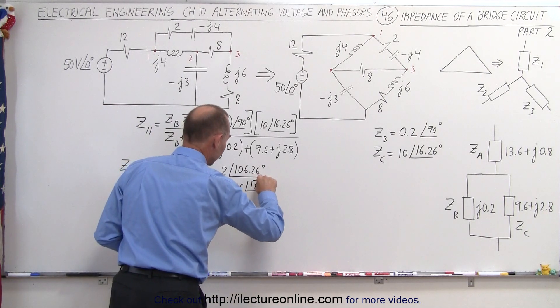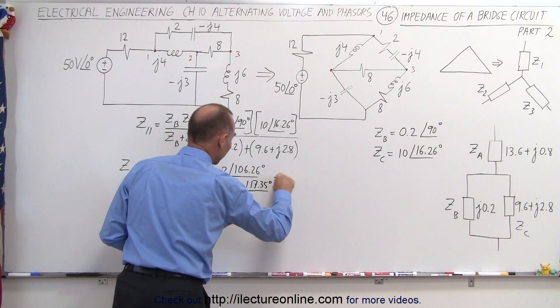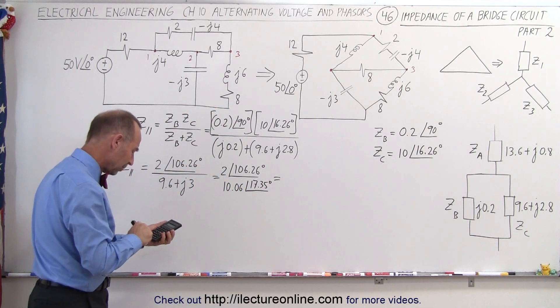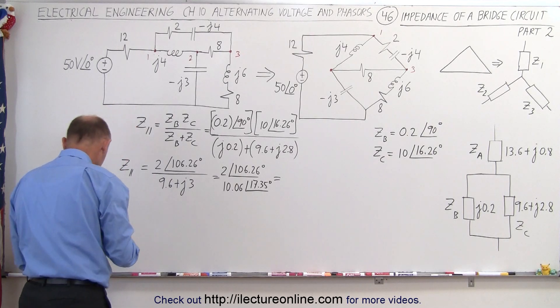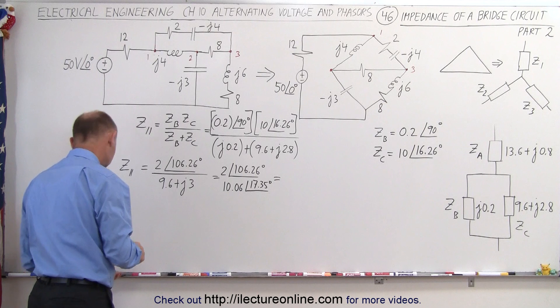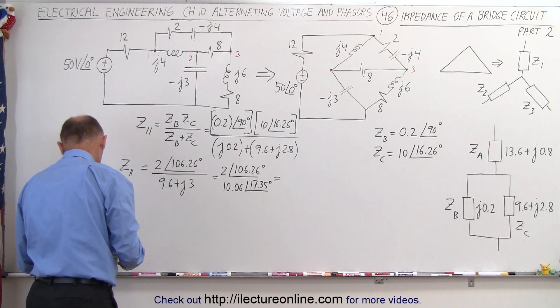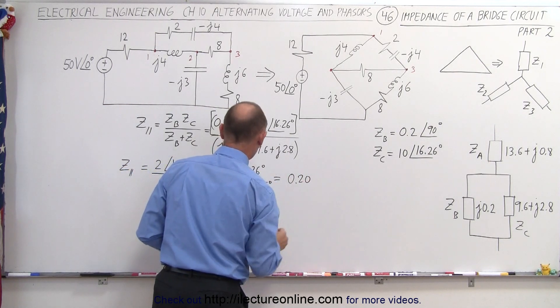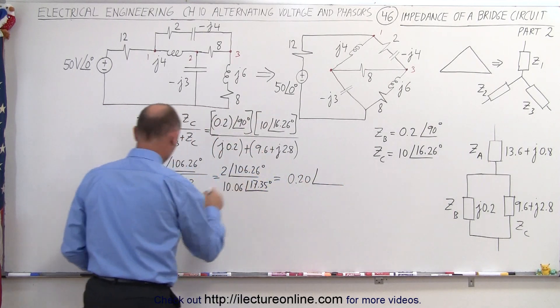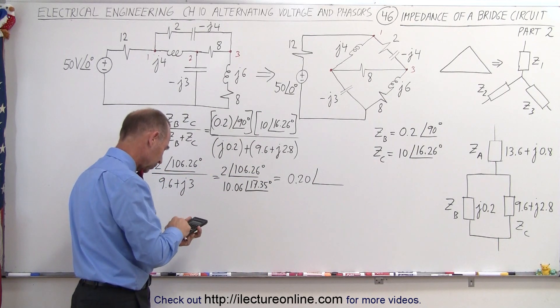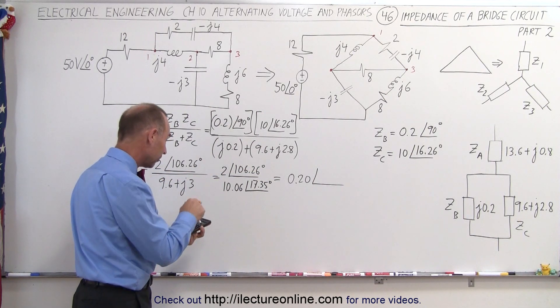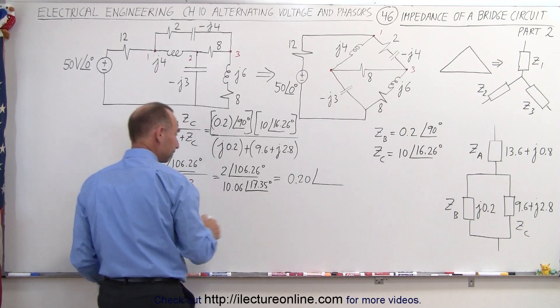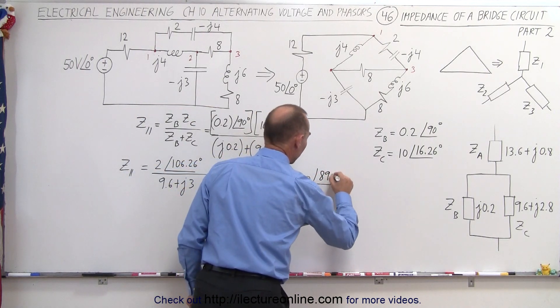And so now, we take 2 divided by 10.06, that's a magnitude of 0.20, or 0.199, I'll just call it 0.20, close enough, and a phase angle of 106.26, and subtract from that 17.35, and we get 89.91.